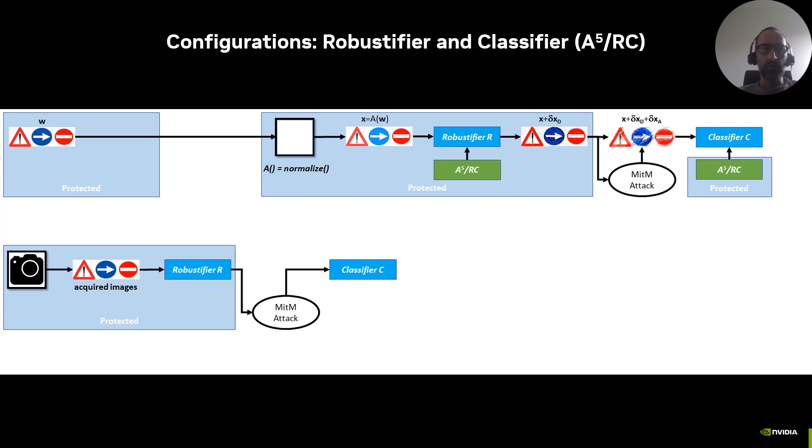So far, we have considered cases where A5 finds defensive augmentations for a given classifier. This is useful to deploy A5 in real systems and using legacy classifiers, but it does not fully exploit the potential of our idea. In A5/RC, we leverage the co-adaptation of a robustifier and classifier during training to further improve the results.